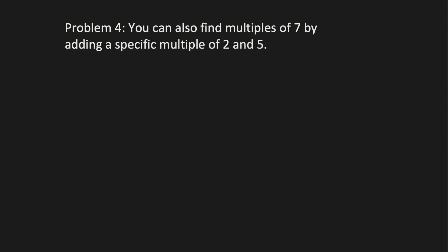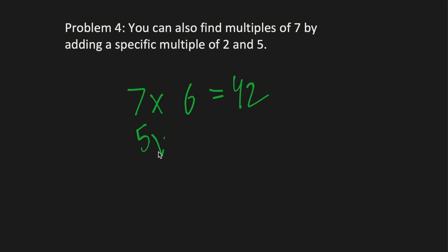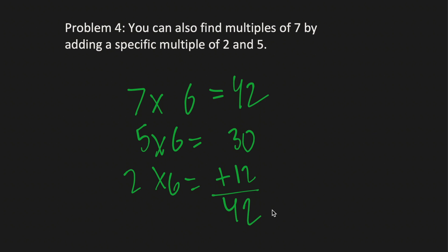Moving on to Problem 4. You can also find multiples of 7 by adding a specific multiple of 2 and a specific multiple of 5. Let's test this: 7 times 6 is 42. 5 times 6 is 30. 2 times 6 is 12. 30 plus 12 is 42 — so this works. It still needs to be the same multiple. You can't add 5 times 10 and 20 times 16; that won't be the same thing.